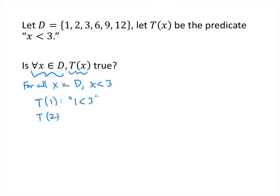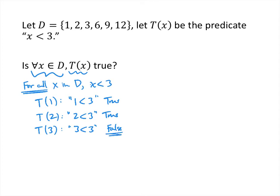T of 1 represents '1 is less than 3,' which is true. But we're trying to find out if the predicate is true for every element of D, so we keep going. 2 is less than 3 — also true. T of 3 represents '3 is less than 3,' but 3 is not less than 3, so that's false. Since we found a false, we know not all elements make the statement true, so we can stop — the answer is no.